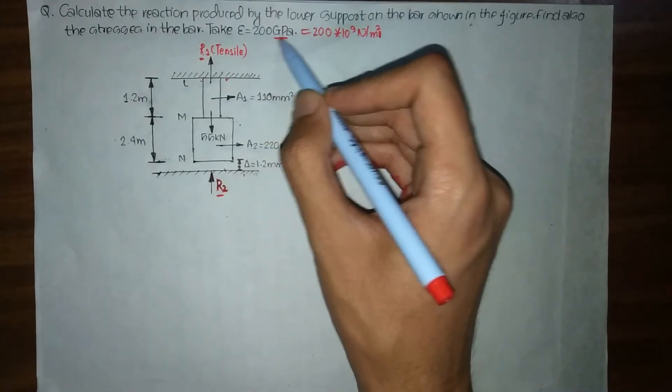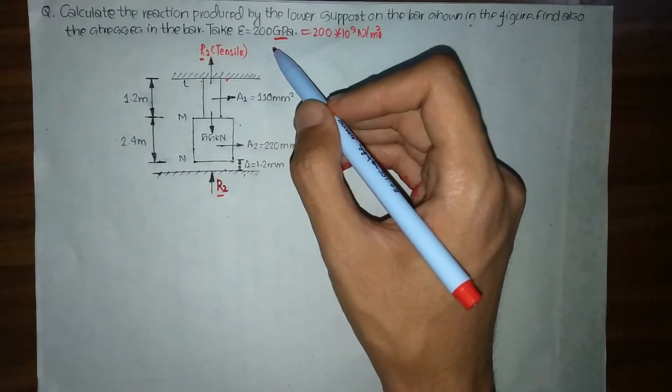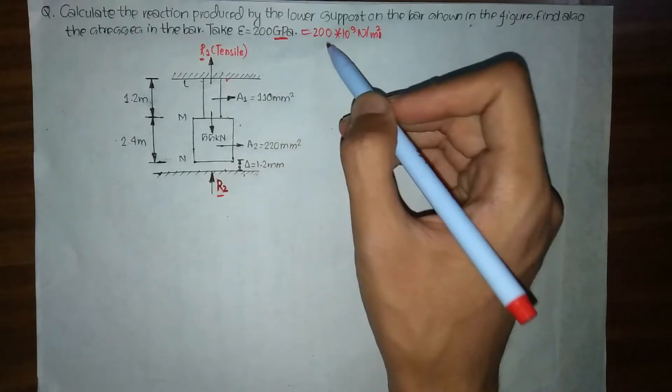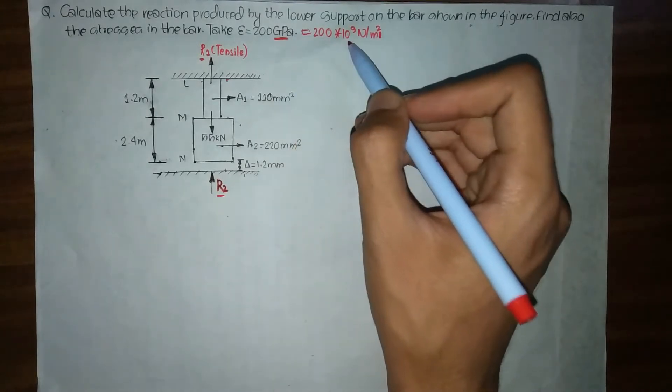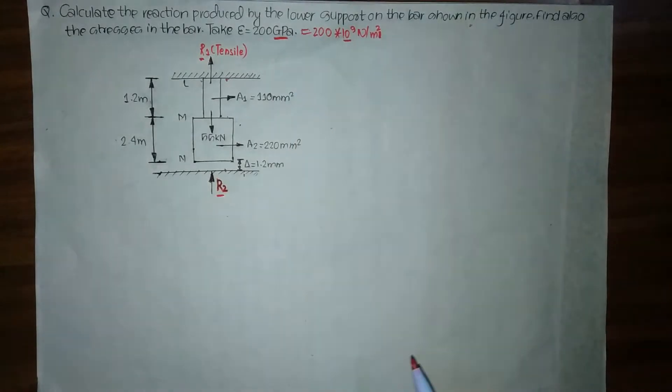We'll be converting this into newton per meter square. In order to convert gigapascals into newton per meter square, we simply need to multiply by 10 to the power 9.